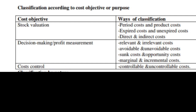This first one is called classification according to the cost objective or purpose. We have three cost objectives: stock valuation, decision-making or profit measurement, and cost control. Where there is cost control, we have the controllable and uncontrollable costs.